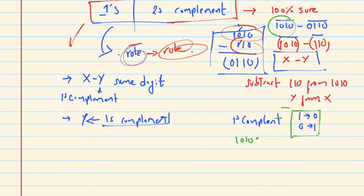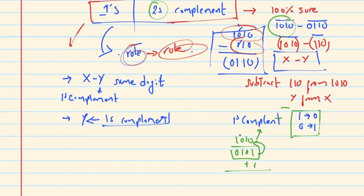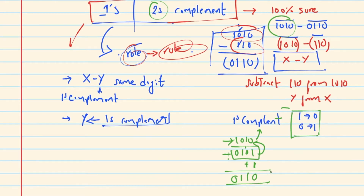The one's complement of 1 0 1 0 counts as 0 1 0 1. What is the two's complement? Two's complement is one's complement plus 1. So 0 is 1 and 1 is 0 — that gives the one's complement, then you add 1.